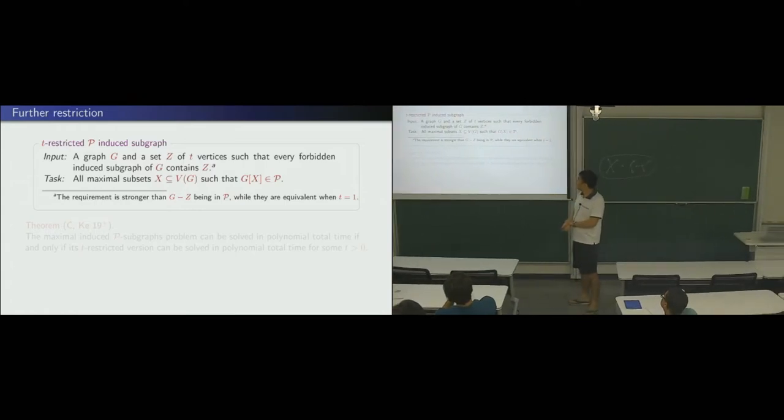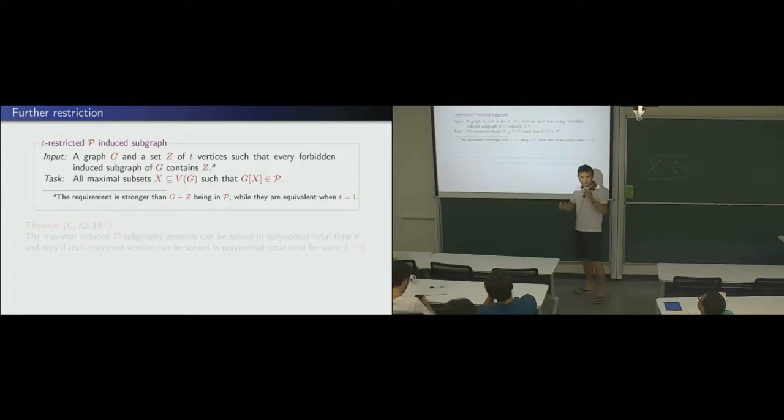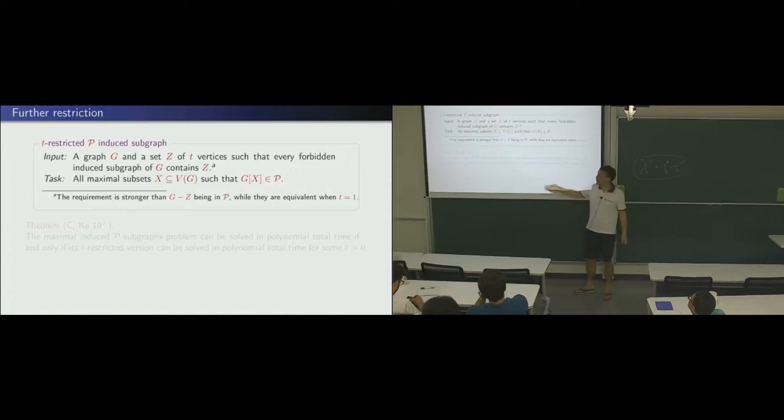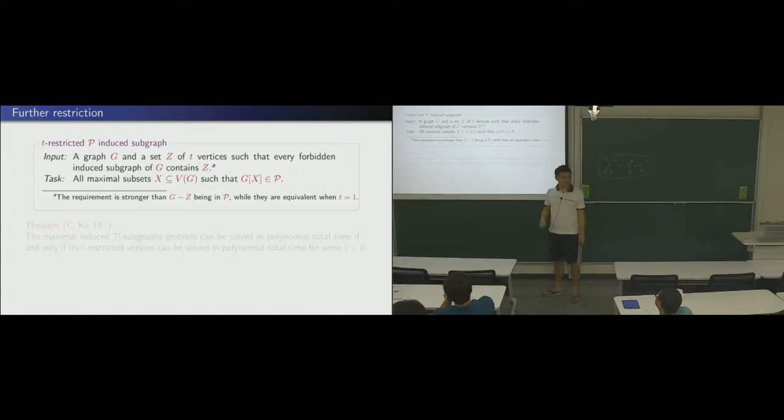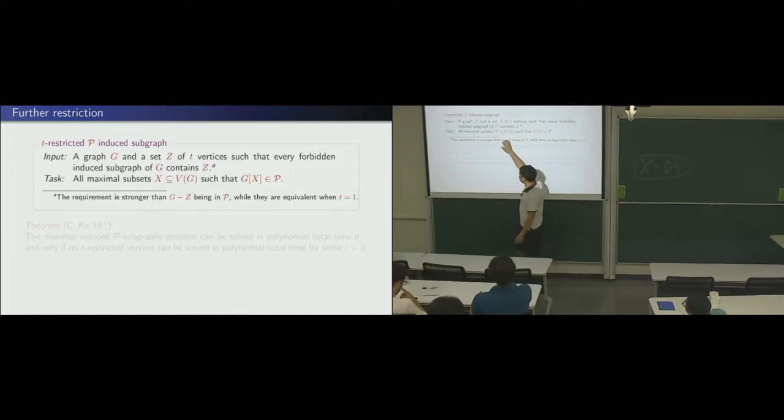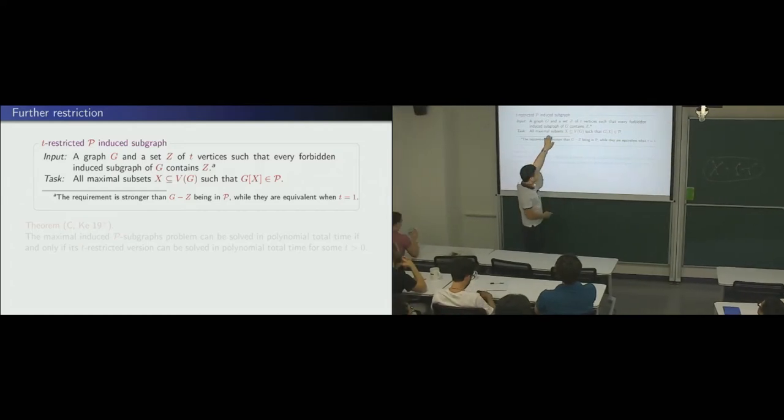The second result is, okay, so, the Cohen's approach is quite, very nice. So, we have a simple case. Now, you have one vertex. If you remove that vertex, the graph is in P. Okay? Why do we generalize that? We have a set Z, that's more than one, has T vertices. But, now the condition is very, very strange. Not just C, we see, G minus Z is in P. Okay? That's not good enough.